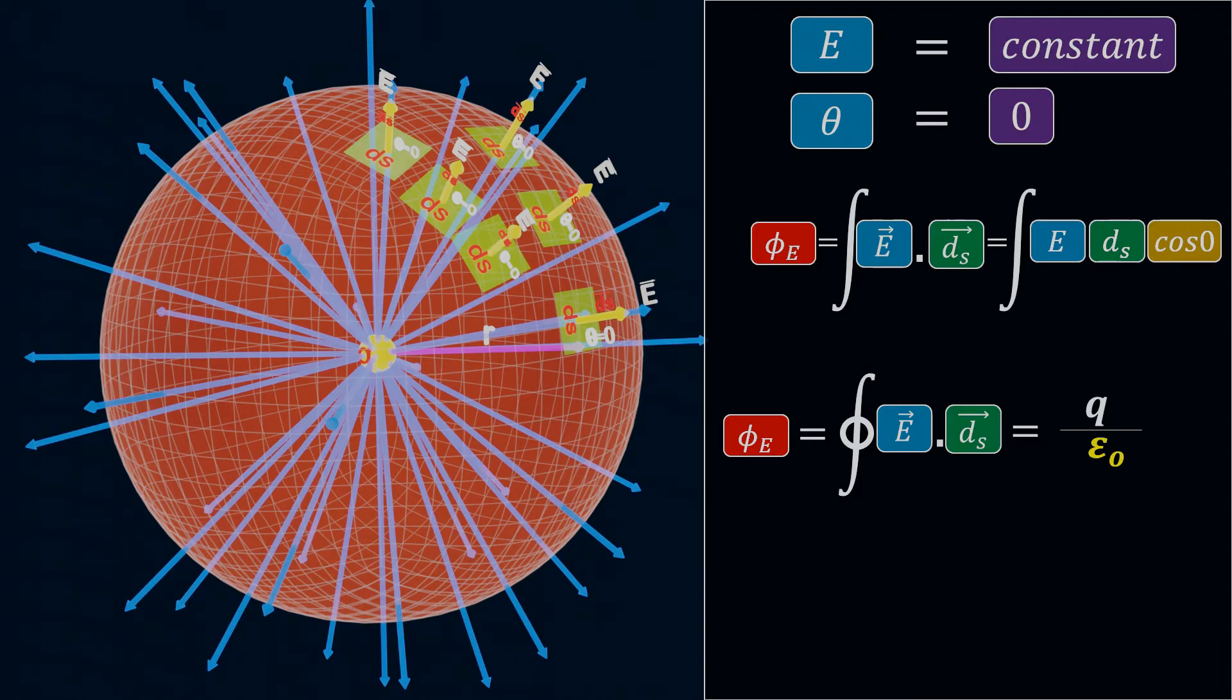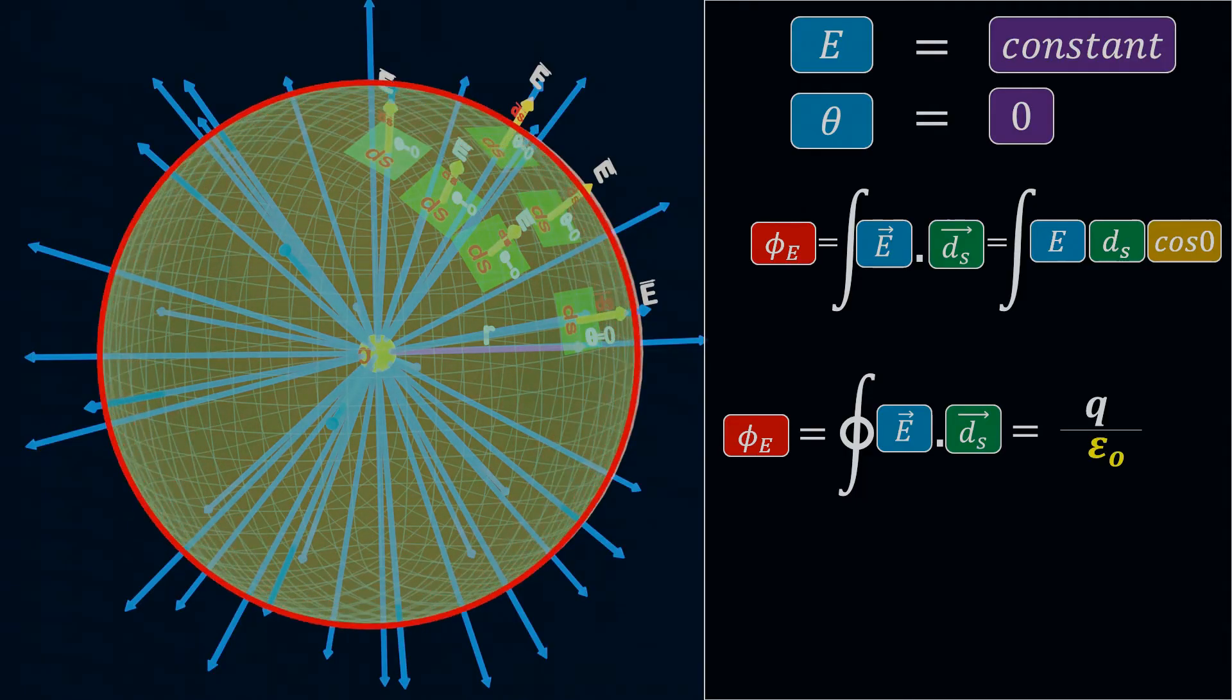As we have seen, in order to calculate electric flux, we imagined a surface around a point charge, where the intensity of the electric field is same at every point. This type of hypothetical surface, which is considered to simplify the calculation, is called a Gaussian surface.